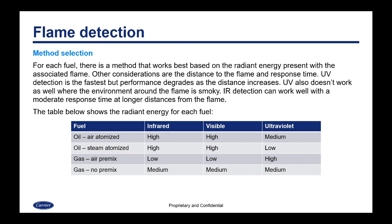For each fuel there's going to be a method that works best based upon the radiant energy present with the associated flame. Other considerations are distance to the flame and response time required. UV detection is the fastest but performance degrades as the distance from the flame increases, and UV also doesn't work as well where the environment is smoky. IR detection can work well with a moderate response time at longer distances. In this table, with air atomized oil you're going to have more infrared radiation than ultraviolet. With steam atomized oil you will have more infrared and much less ultraviolet — most likely because steam atomization creates a smokier environment. Gas with an air premix is low on infrared but high on ultraviolet; gas with no premix is about medium on both, so either would work equally well.